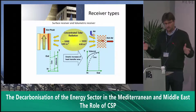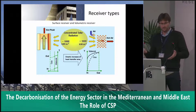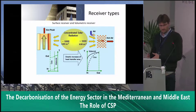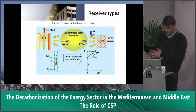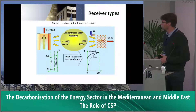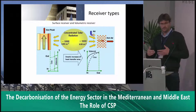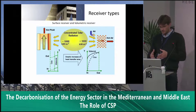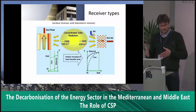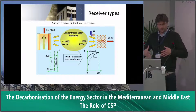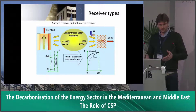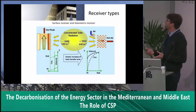There are two types of receivers to achieve this: a surface receiver or a volumetric receiver. I will focus only on the volumetric receiver. For the surface receiver, the maximum temperature is at the outside of the tube, while the heat transfer fluid inside the tube is at a lower temperature than the surface material that is heated by the concentrated solar radiation, which means larger thermal losses and lower receiver efficiency.